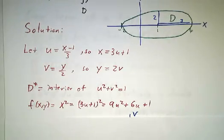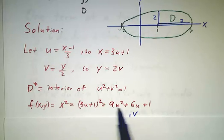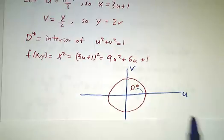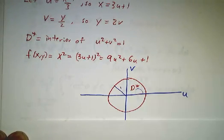So our original function, which was x squared, becomes (3u plus 1) squared, becomes 9u squared plus 6u plus 1. And the region that we're integrating in the uv plane is just the interior of the unit circle.